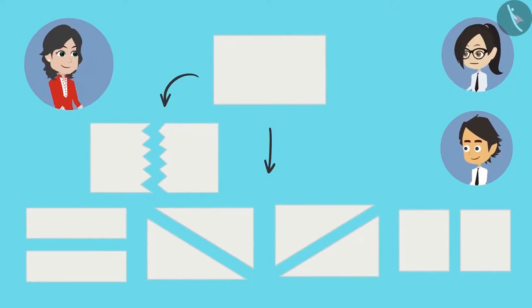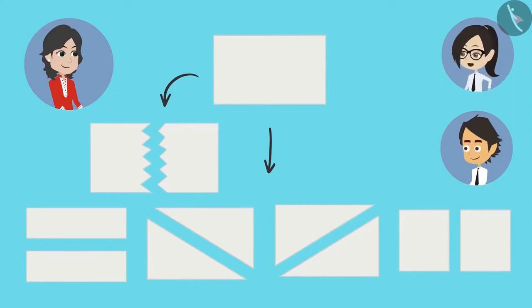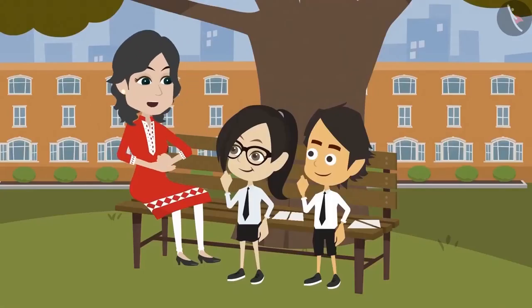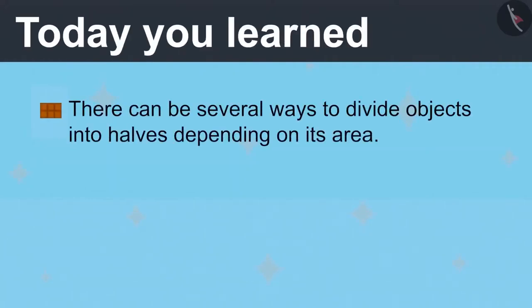I have understood. This means the paper is measured based on its area, so we can divide it into half in any way. We just have to take care that the two parts are of the same area. Absolutely right, Vandana. Today you learned there can be several ways to divide objects into halves depending on its area.